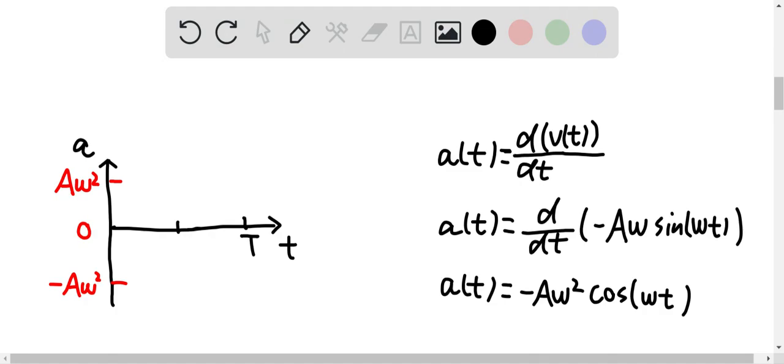For the acceleration versus time graph, we know that the acceleration versus time function is equal to the derivative of the velocity versus time function, which is negative A omega squared cosine omega t. Therefore, the amplitude is either A omega squared or negative A omega squared.